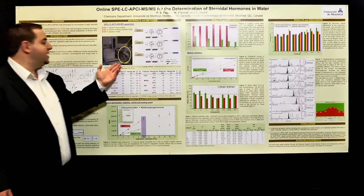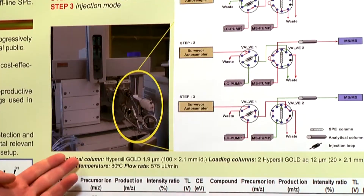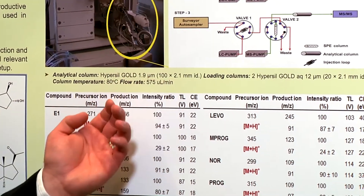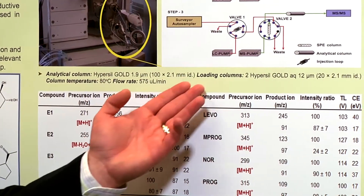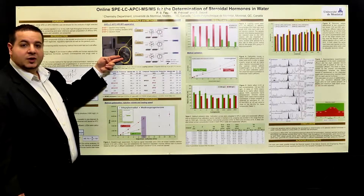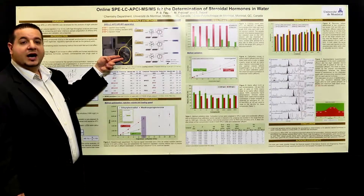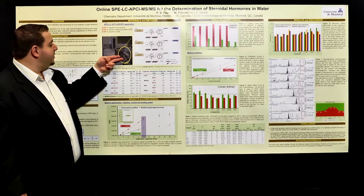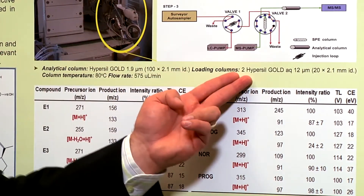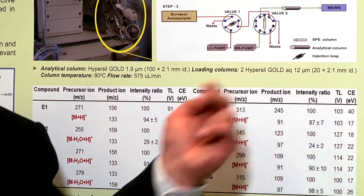We're using the Thermo TSQ Quantum triple-quad for the target compounds. The analytical columns are Hypersil Gold 1.9 micron, 100 × 2.1 mm. We have two loading columns in tandem — two Hypersil Gold AQ columns, 20 × 2.1 millimeters — and I'll show you why we're using two tandem SPE columns.